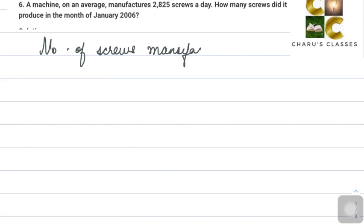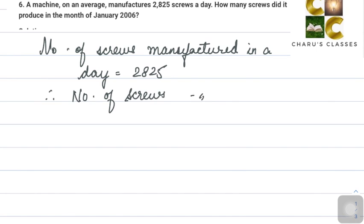Number of screws manufactured in a day is 2,825. Therefore, number of screws manufactured in January equals 2,825 multiplied with 31, because there are 31 days in January. So: 5 times 1 is 5, 2s are 4, 8s are 24, carry 2...